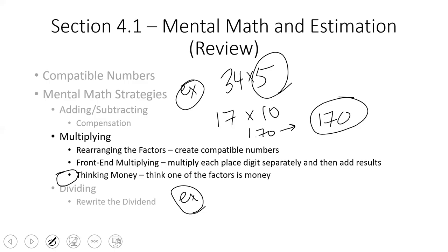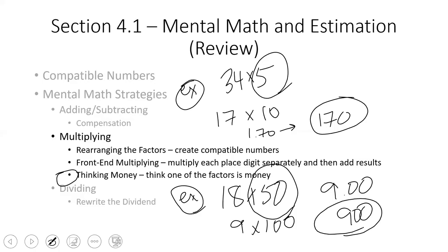The same thing applies if I was looking at a problem like 18 times 50. Well, I know that if I were looking at 50 cents, two half dollars make a dollar. So I can make this 100 or $1 times nine. So I can see now that I would have $9 or essentially since we are not actually talking money here, it would be a product of 900.